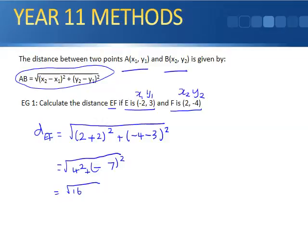So we've got 4 squared is 16, and negative 7 squared is 49. Remember, a negative squared becomes a positive. Now, when you add these up, you get 65, so the square root of 65.